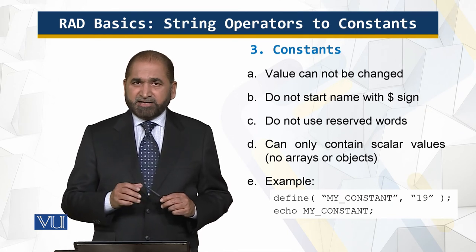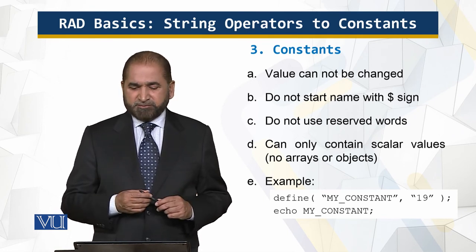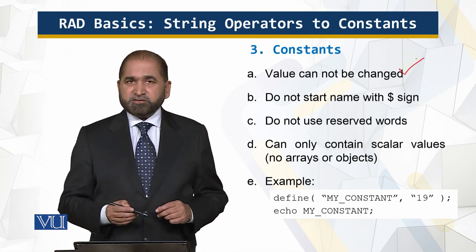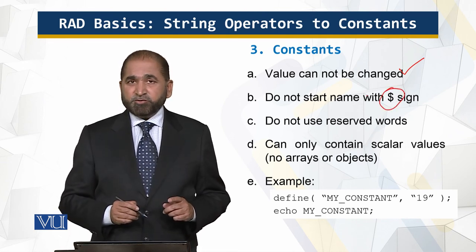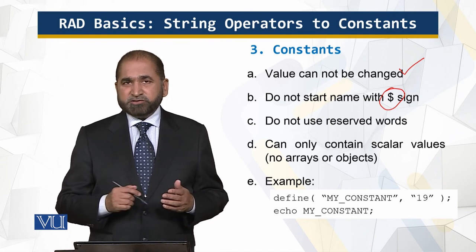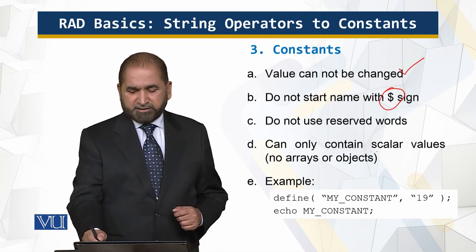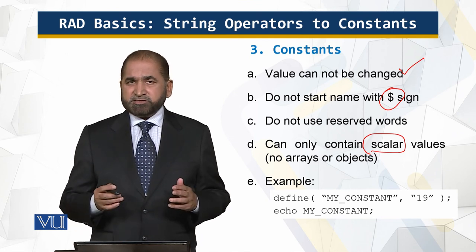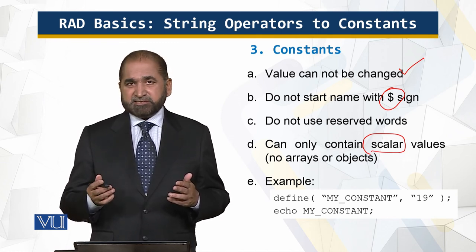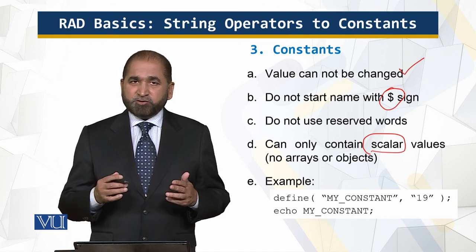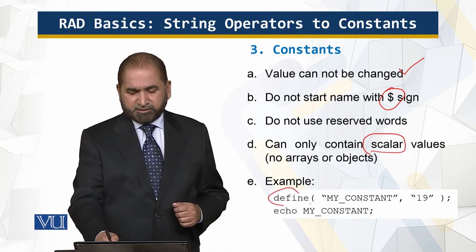Let's talk about constants. Unlike variables, a constant's value does not change — it remains the same throughout the program. A constant is differentiated from a variable: it has no dollar sign, and you should not use reserved words such as GET, POST, or echo. It can only contain scalar values. By convention, constants are denoted using uppercase letters. PHP is case sensitive, so a constant name in lowercase is different from one in uppercase.